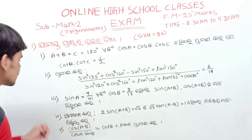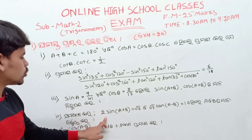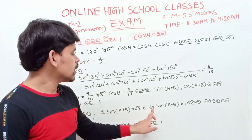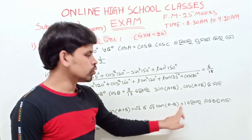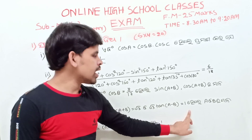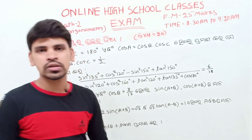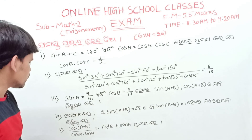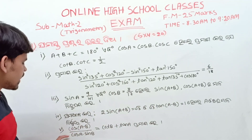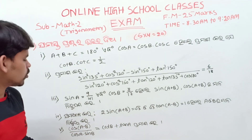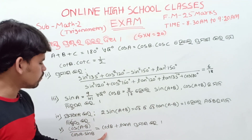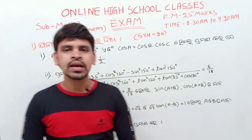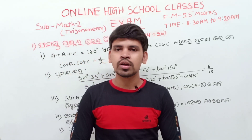Next question: cos(A minus B) divided by cos A into sin B equal to cot B plus tan A. Prove this identity.